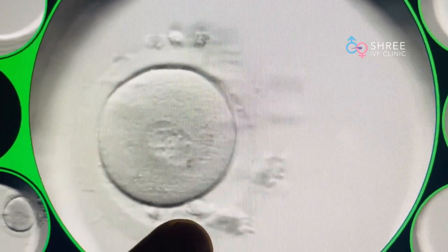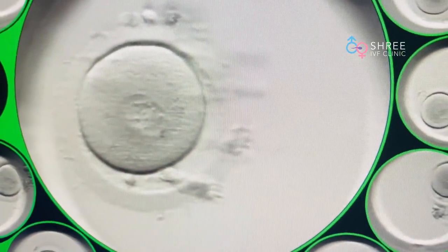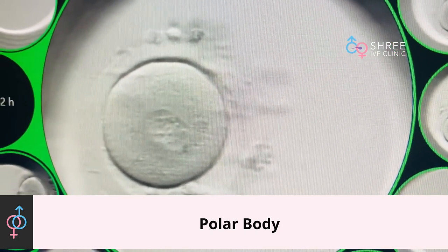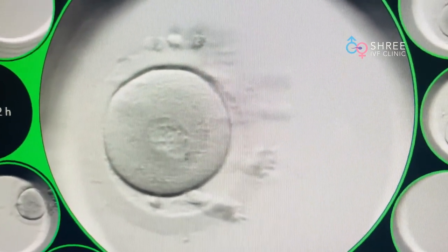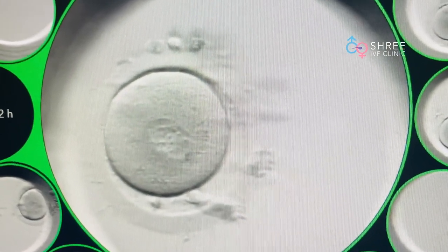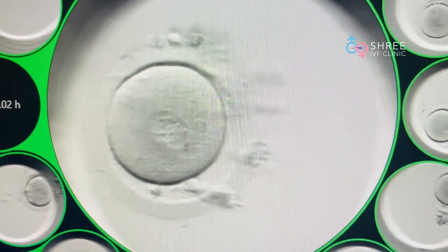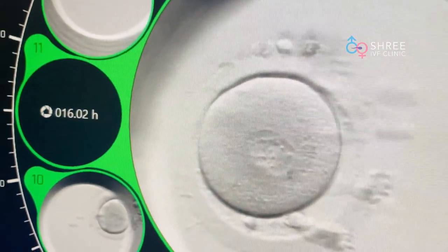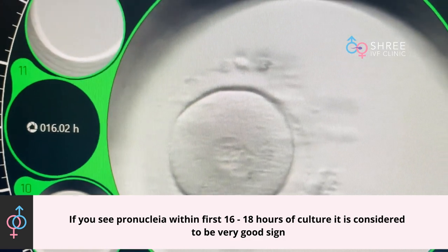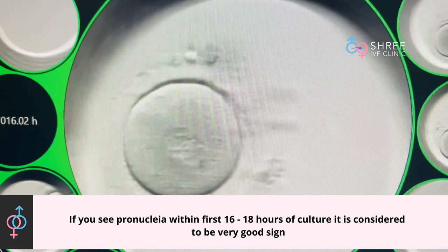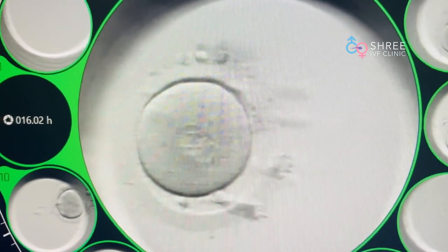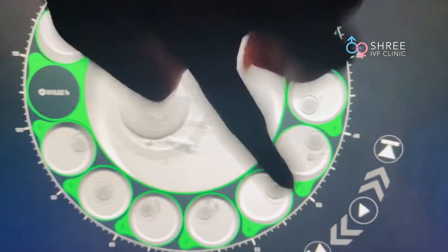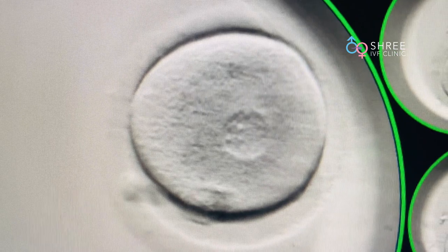When looking at the pronuclei, it is very important to also assess this small circle — you can see it here. This small circle is called the polar body. As a patient, one must remember that as an embryologist or ART specialist, we are looking at certain characteristics inside this 2PN stage. The first thing is timing: this patient has undergone approximately 15 hours of culture. Seeing the pronuclei within the first 16 to 18 hours of culture is considered a very good sign.